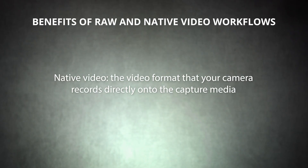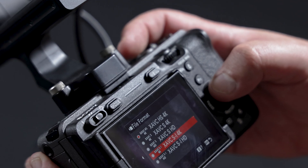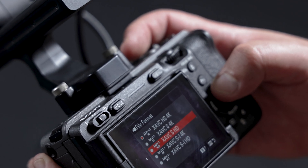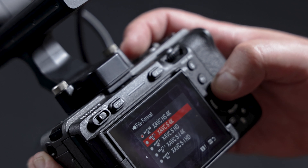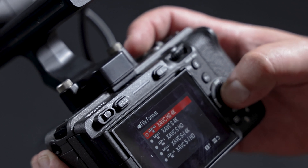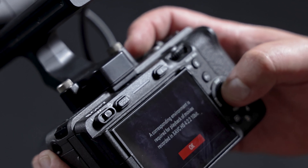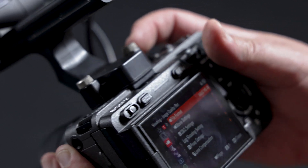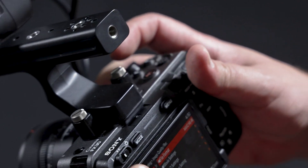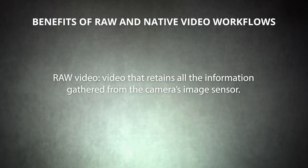Let's start with some definitions. Native video is the video format that your camera records directly onto the capture media. Depending on your camera, different recording options may be available, but whatever your options, it's always nice to use the highest quality format whenever possible — that's how you make the most out of your production gear. However, these files can be quite large with high bit rates, making them unwieldy on ill-equipped editing systems.